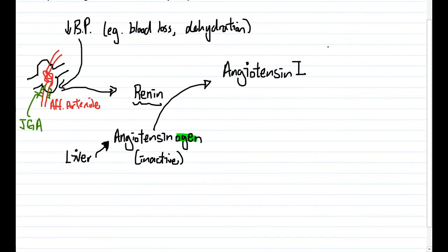Now angiotensin one, for simplicity's sake, is not going to have any immediate effect. We still have to activate it one more time into angiotensin number two, and in order to convert it from number one to number two, you would have to have another enzyme that does this, and this enzyme is going to be produced at the lungs, and it's called angiotensin converting enzyme, or ACE for short.